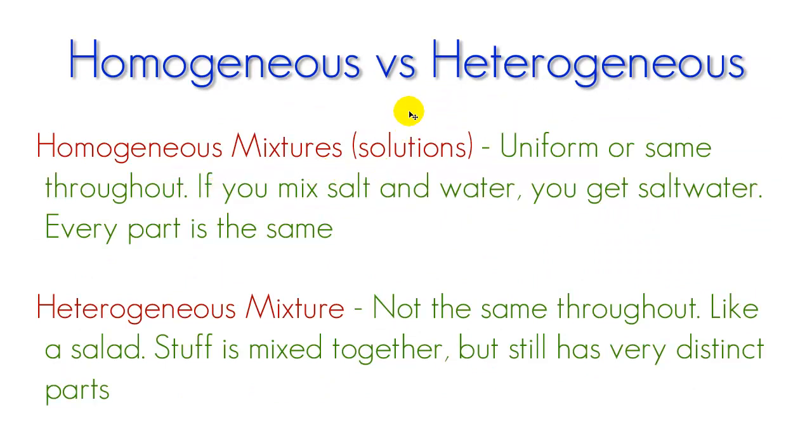Homogeneous mixtures are sometimes called solutions because they're uniform or same throughout. For example, if you took some salt and you threw it into a cup of water and you shook it up real good, then you would have saltwater. Now whether you took a sample from the top of the glass or the bottom of the glass or somewhere in the middle, you're always going to have saltwater. It's not going to change whether you take a little bit, a lot. It's all saltwater. There's nothing you can do about it.